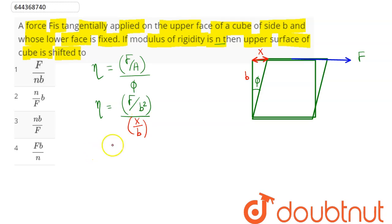Hence, B and B cancels out. So we have the relation as F divided by X into B. The shift is F divided by eta into B and value of eta is given as N. So F by N into B,